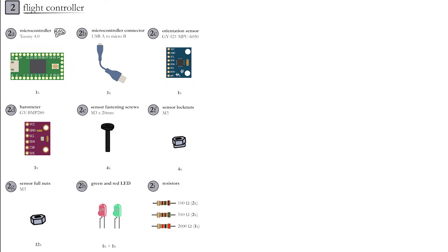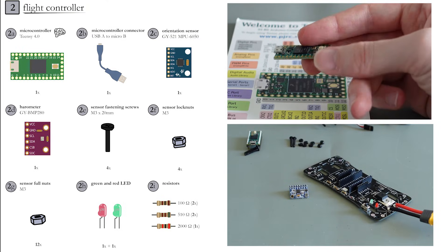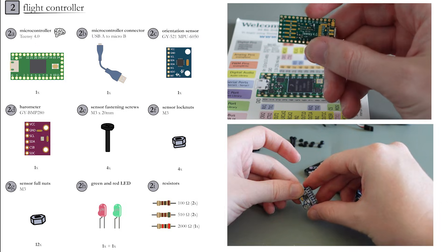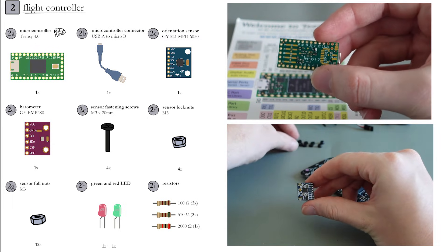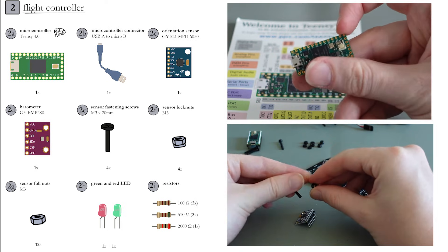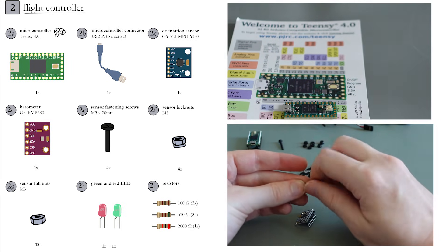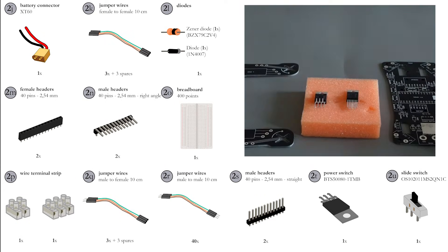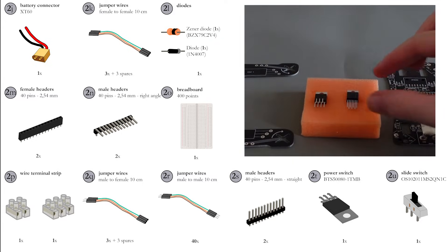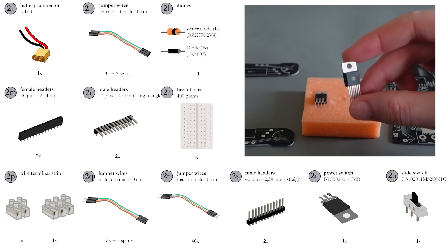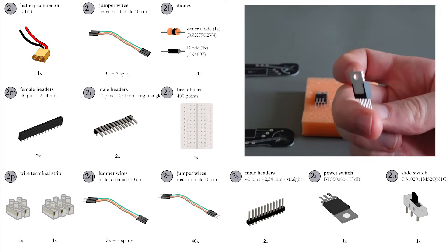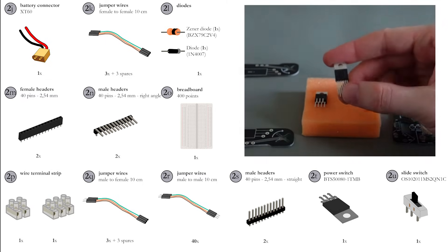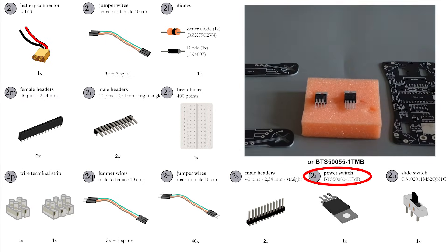Now let's continue with the electronics necessary for the flight controller. All parts are off-the-shelf components available in various online shops. The most important components are the TNC 4.0 microcontroller and the MPU 6050 orientation sensor. You will also include a barometer, screws and nuts to fasten both sensors, a green and red LED, and a couple of resistors. The rarest component is the Infineon BTS power switch, available at dedicated electronic shops such as Mouser. Two variants can be used: the BTS 580 or the BTS 555. If you cannot find this component, you can simply bypass it as explained in the final minutes of part 9.